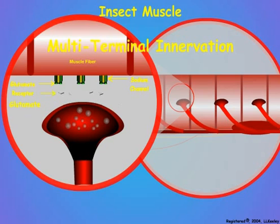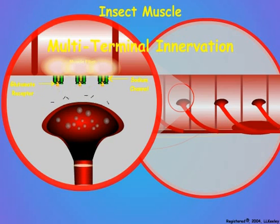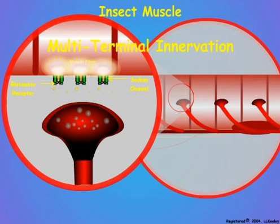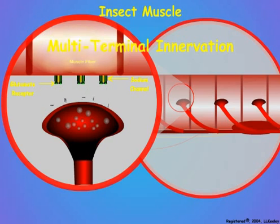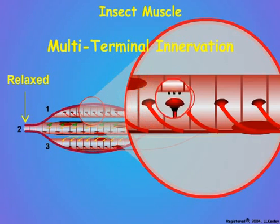Repeated nerve impulses cause increasing release of glutamate, resulting in additive electrical depolarizations and increased contraction of the arthropod muscle fiber. The increasing degree of depolarization and contraction in response to multiple repetitive motor nerve impulses is termed facilitation or temporal summation.